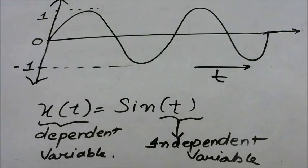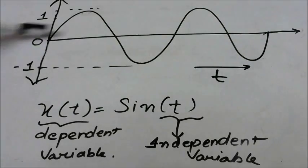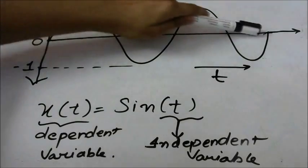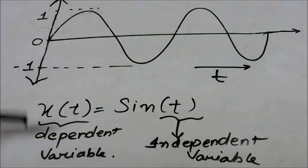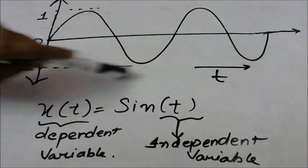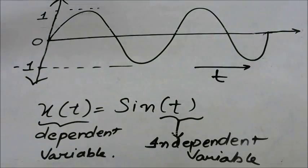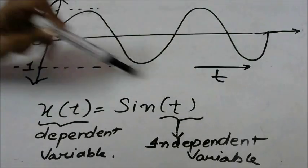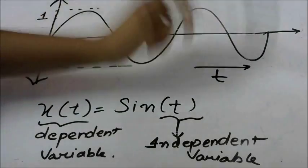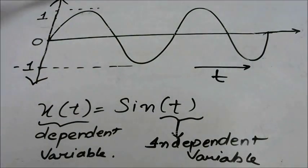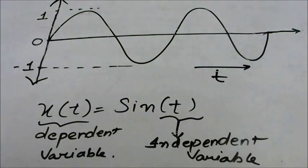Let us consider this signal. Here, t is the independent variable — this is the axis of t. And x(t), that is sin(t), is the dependent variable, dependent upon t. The signal travels this way. This is called the amplitude axis and this is called the time axis.